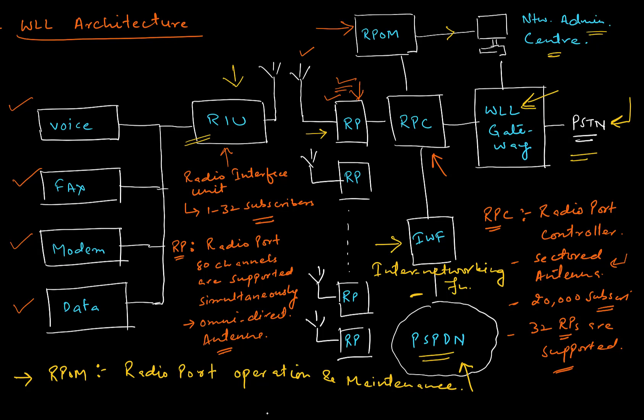Through this Radio Interface Unit — which may be kept inside or outside the home — all services like voice services, fax services, modem, and data services are provided to a WLL user. This is all about the WLL architecture.